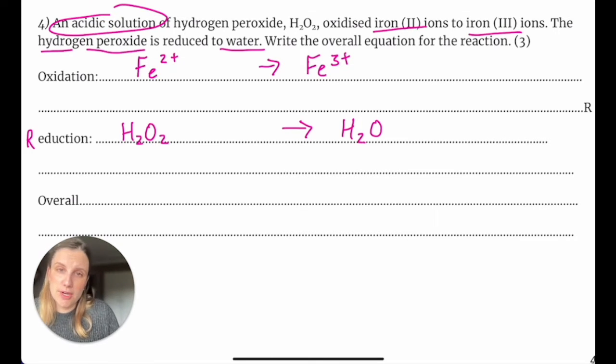Okay, so we've got these two equations here that need balancing. Hopefully the first one is kind of more okay because it's just got iron, there's only one element there. So the atoms for iron already balance, I've got one iron on each side.